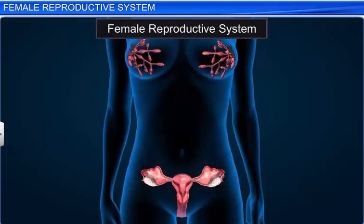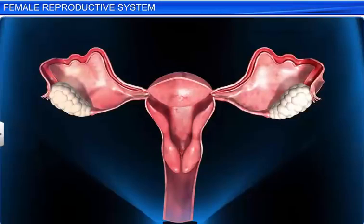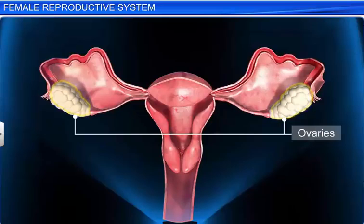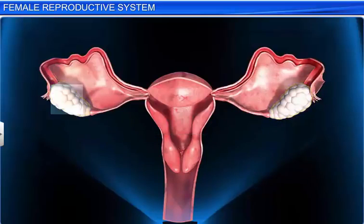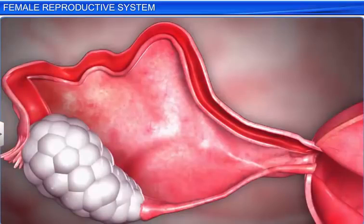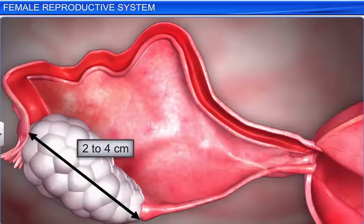Let us study each organ in detail. The female reproductive system includes a pair of ovaries, located one on each side of the lower abdomen. They are the primary sex organs, as they produce the ovum, or the female gamete. Each ovary is about 2 to 4 centimeters in length. They are connected to the pelvic wall and the uterus by ligaments called mesovarium.